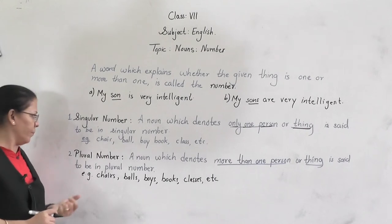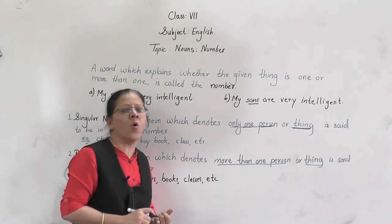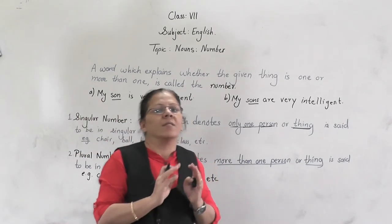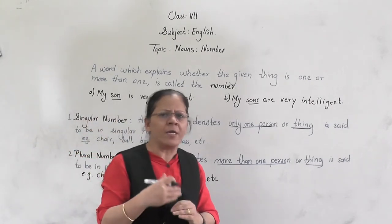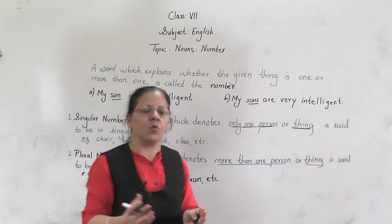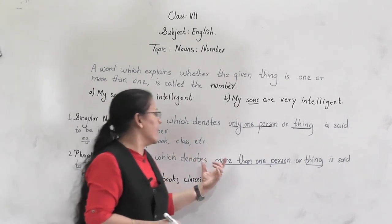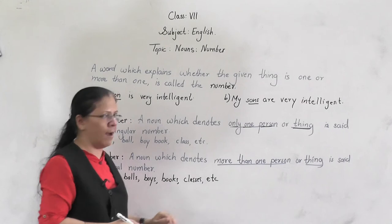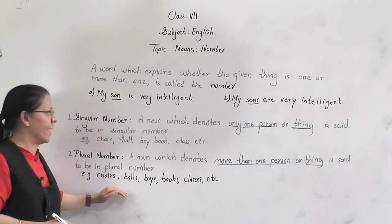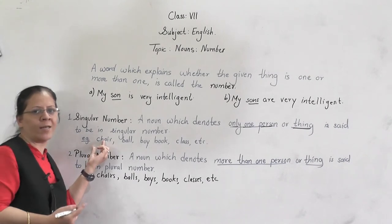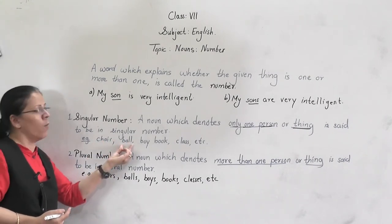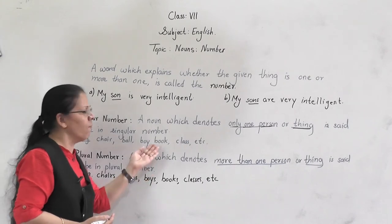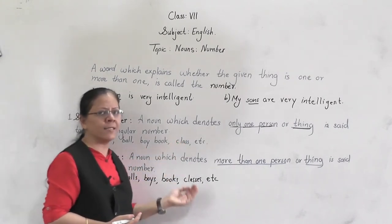Now, what is plural number? A noun which denotes more than one person or thing — whether two, three, five, or any number — it is called plural number. For example: chair becomes chairs, ball becomes balls, boy becomes boys, book becomes books, class becomes classes. So if it is one it is singular, and more than one makes it plural.